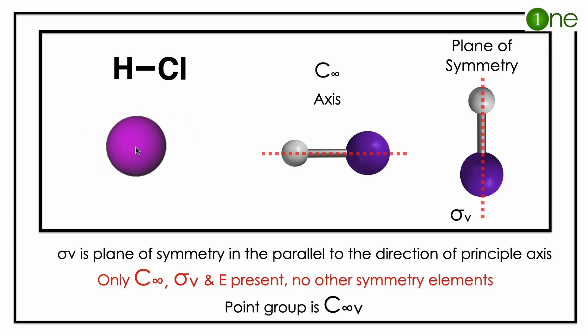So you have C infinity and sigma v, meaning the point group is C infinity v. The concept to learn here is: HCl molecule is a hetero diatomic molecule. It is linear in nature. The point group is C infinity v.